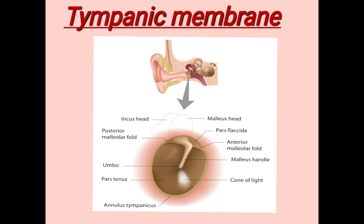The tympanic membrane has some landmarks. First is the umbo. Second is the handle of malleus. Third are the anterior and posterior malleolar folds. Fourth is the annulus at the circumference. Fifth is the cone of light. Two more important markings are the pars tensa — the central area — and the pars flaccida area at the superior part.